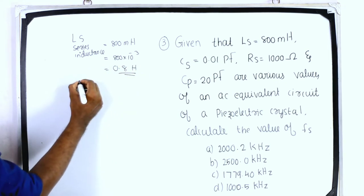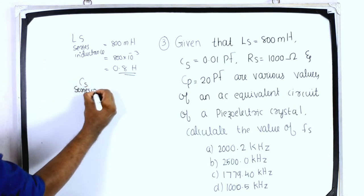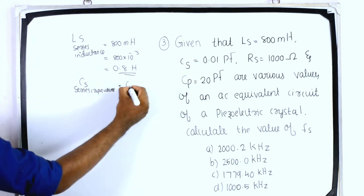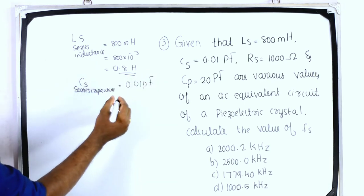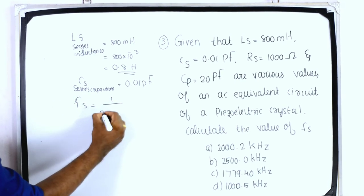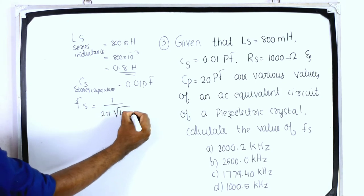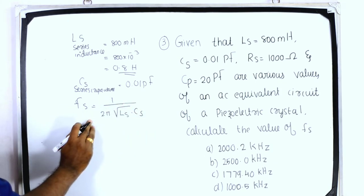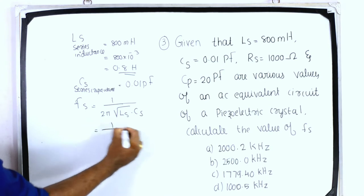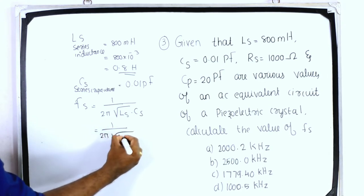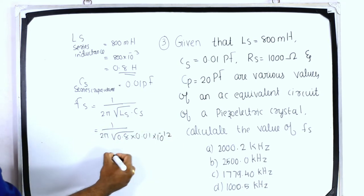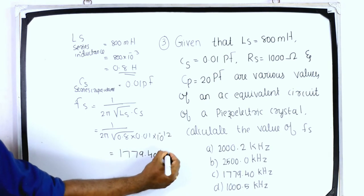CS is the series capacitance = 0.01 pF. For a crystal oscillator, the frequency of oscillation is fs = 1 / (2π × √(LS × CS)). Substituting: fs = 1 / (2π × √(0.8 × 0.01 × 10⁻¹²)) = 1779.40 kHz.